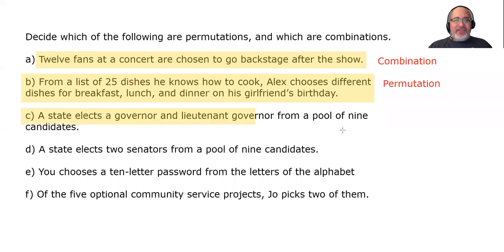A state elects a governor and lieutenant governor from a pool of nine candidates. Does it matter what order he selects them in? Of course, whoever he selects first will be the governor. Whoever he selects second will be the lieutenant governor. Since the order matters, this is a permutation. Remember, order matters is a permutation. Order doesn't matter is a combination.